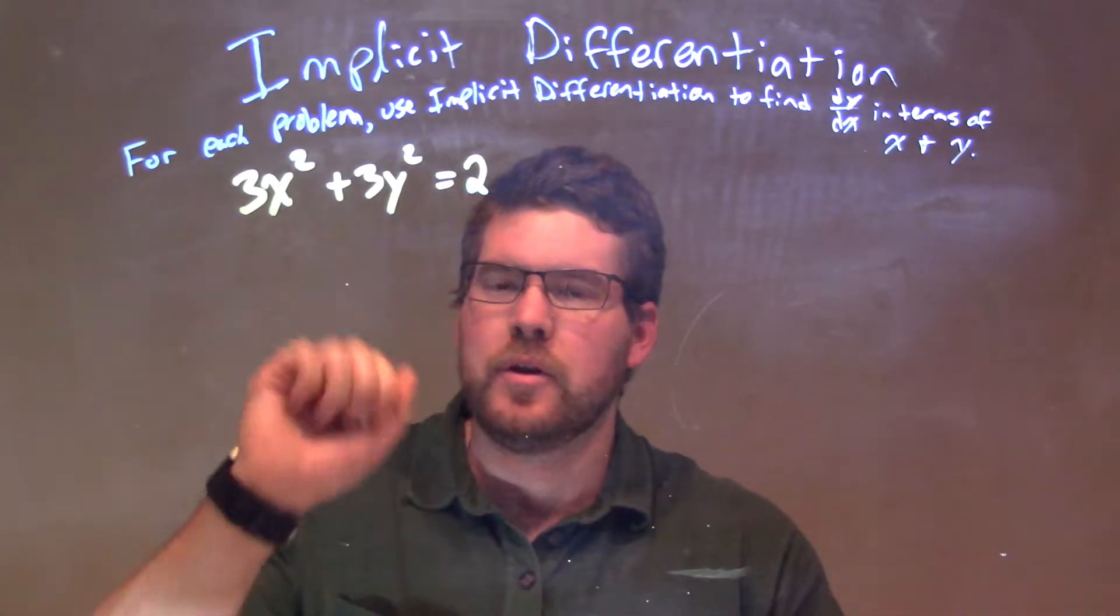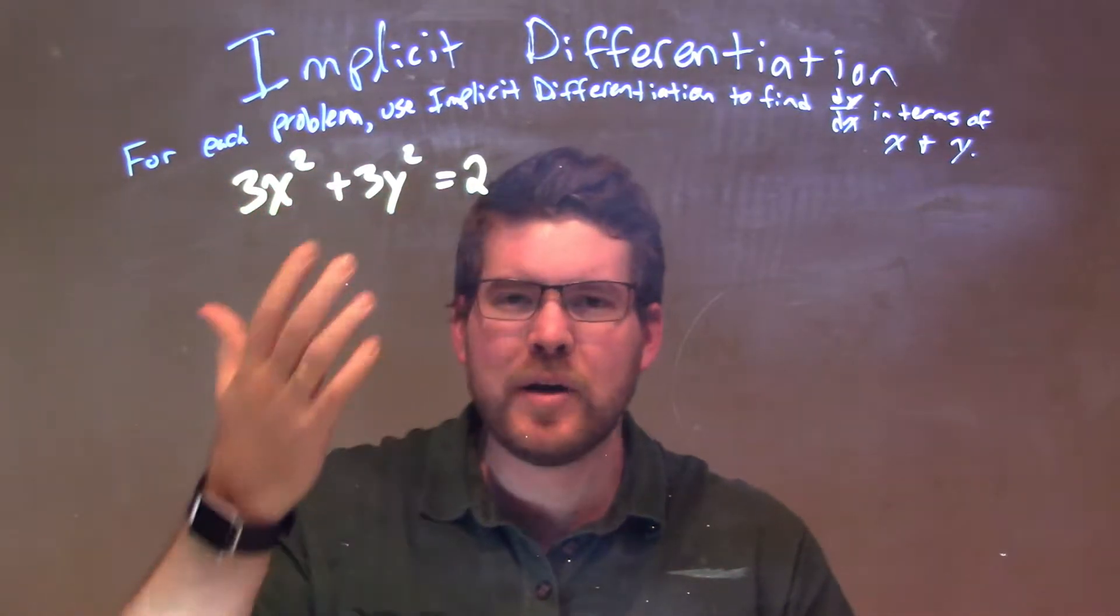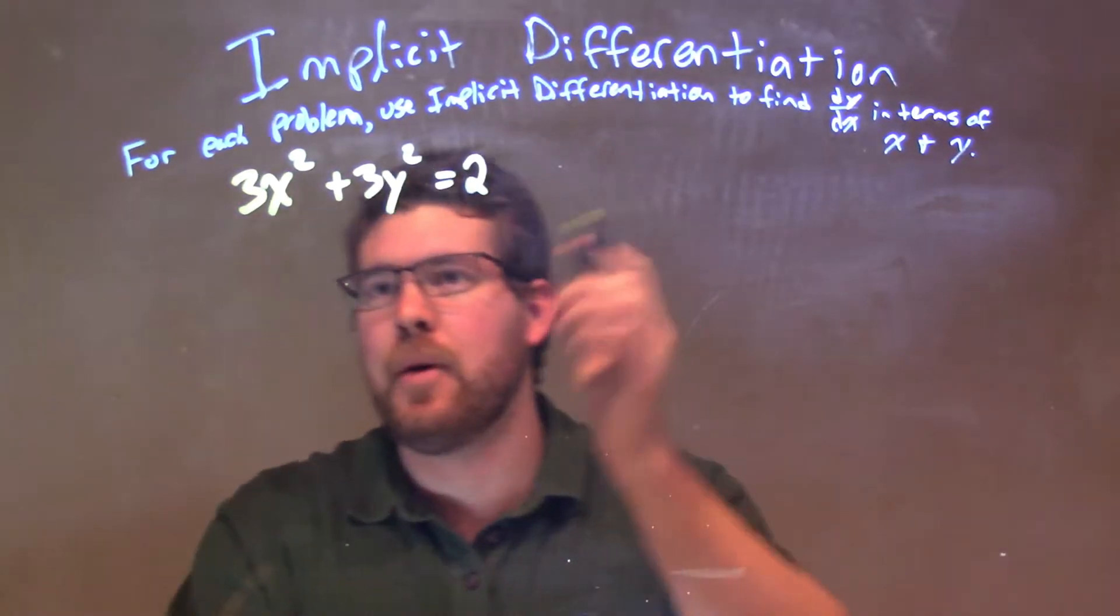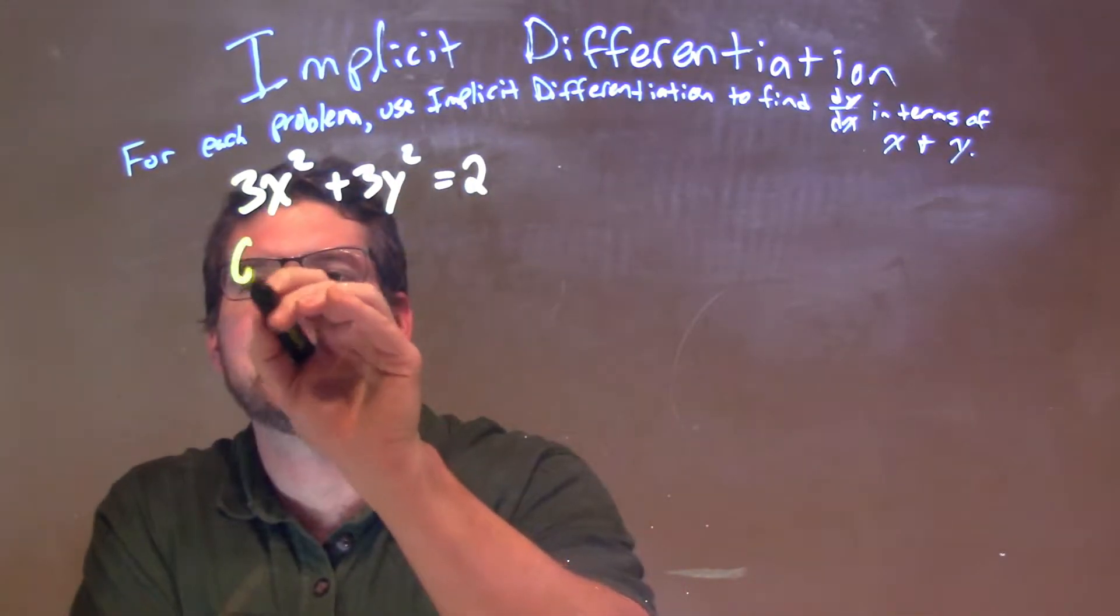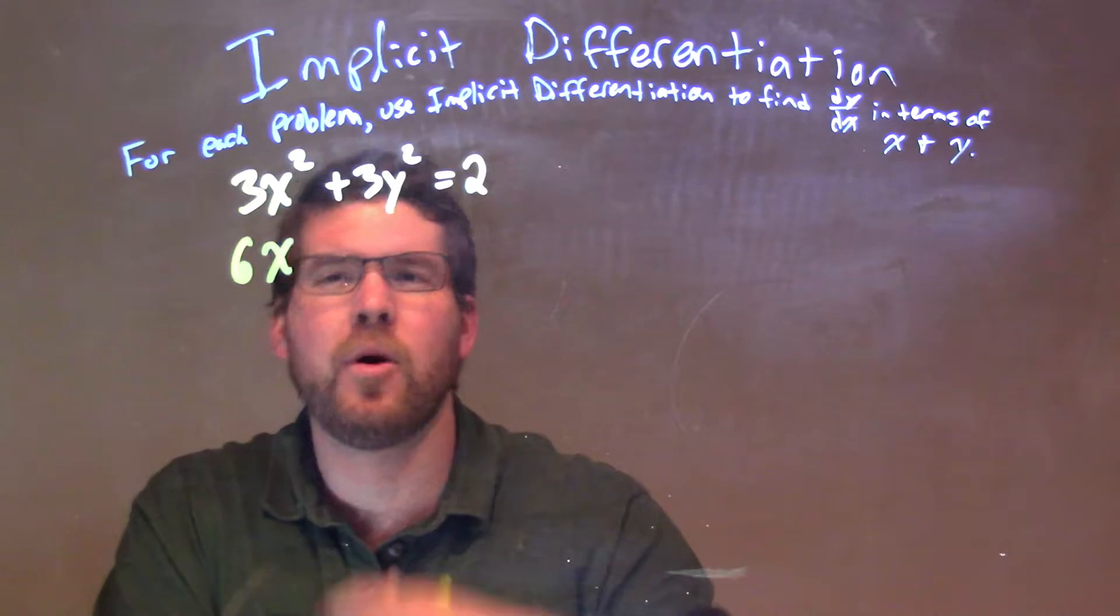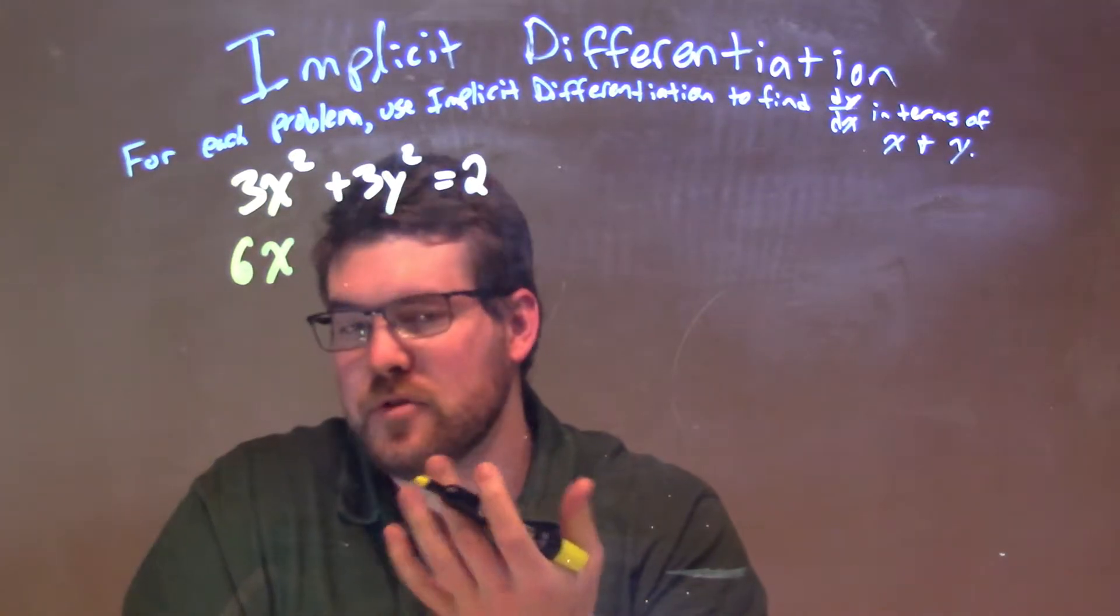What I want to do is take the derivative on the left-hand and right-hand side. I'm going to treat x just like I normally would. Power rule: 2 comes down, times 3 is 6. So 6x, subtract the exponent by 1, so 6x to the first power.